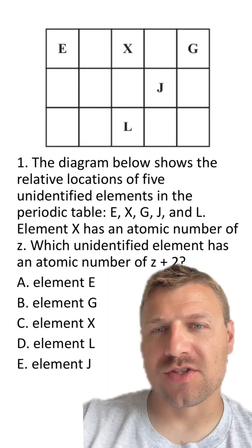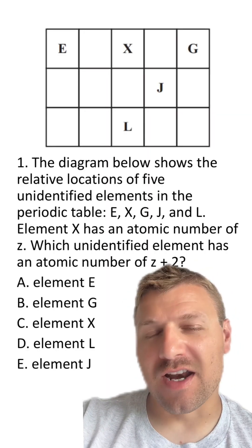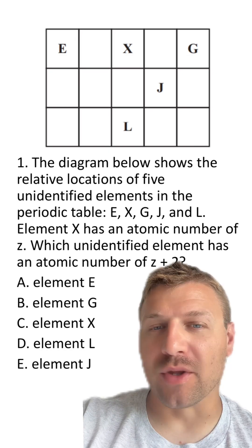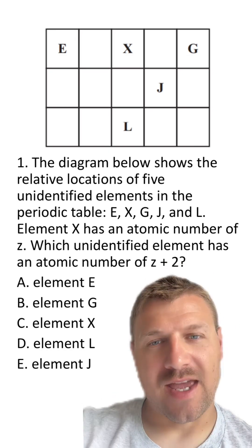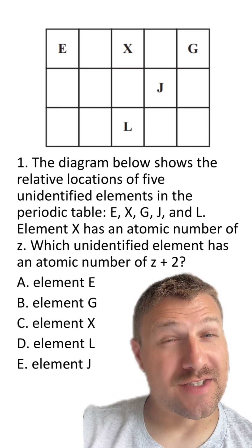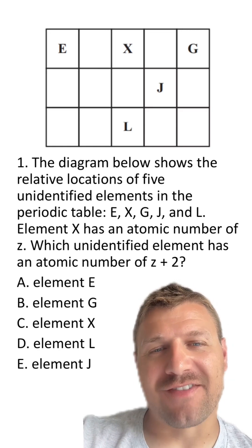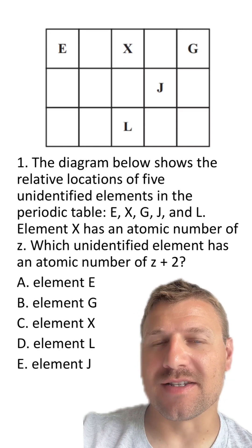Question one: the diagram above shows the relative locations of five unidentified elements in the periodic table: E, X, G, J, and L. Element X has an atomic number of Z. Which unidentified element has the atomic number Z plus two?